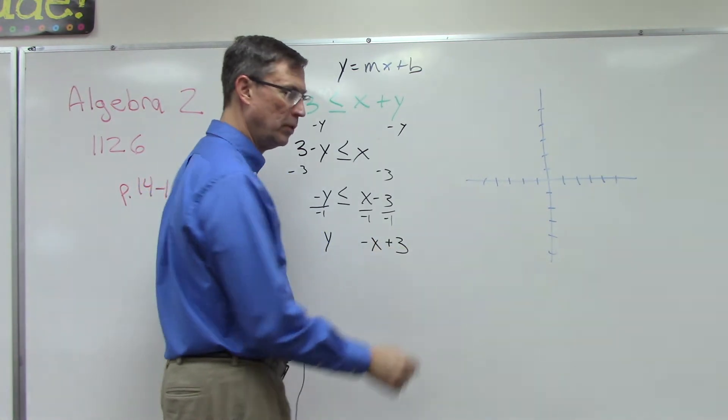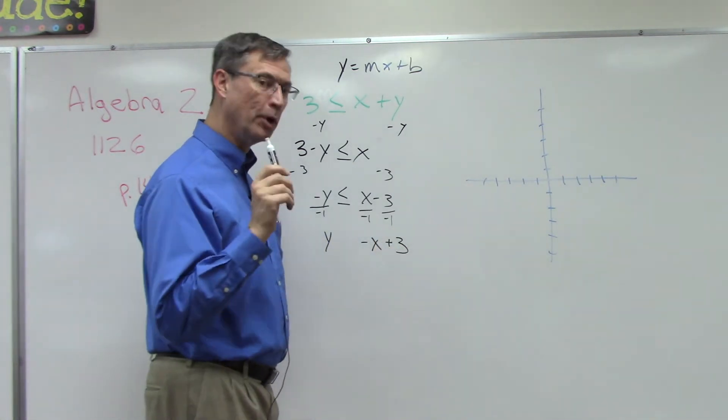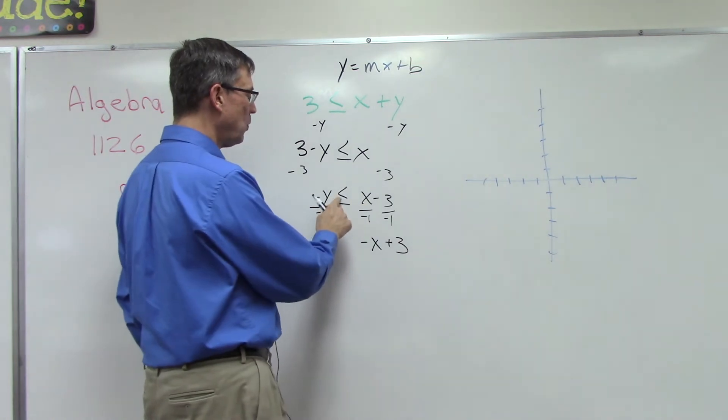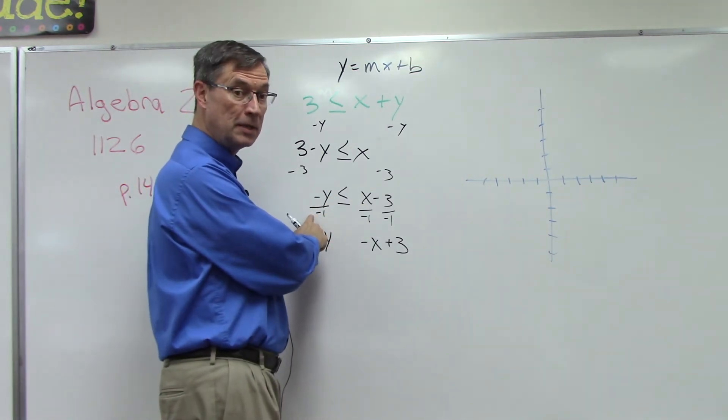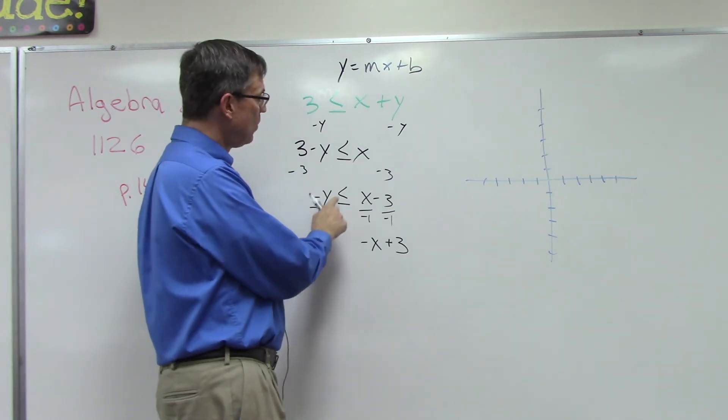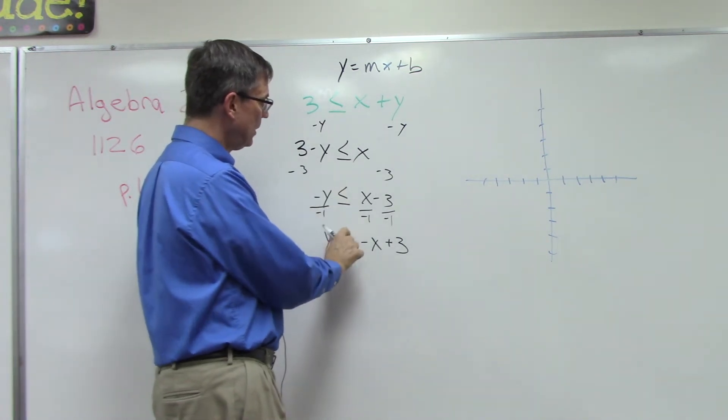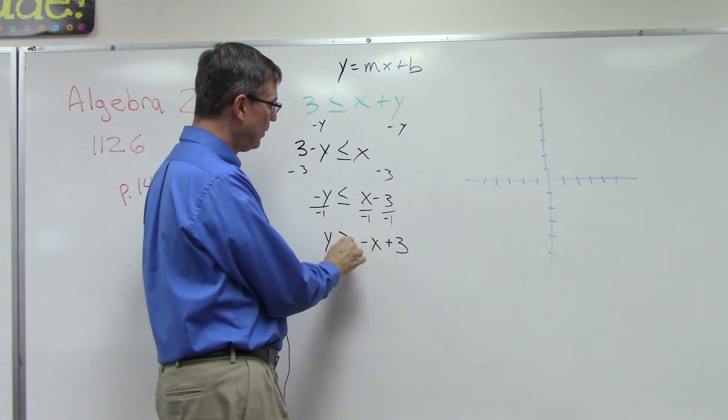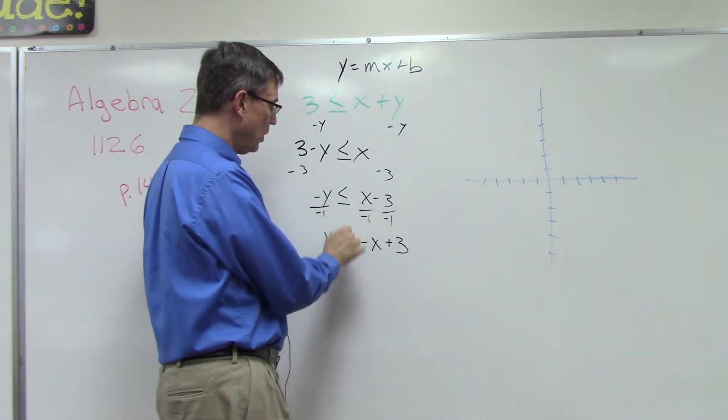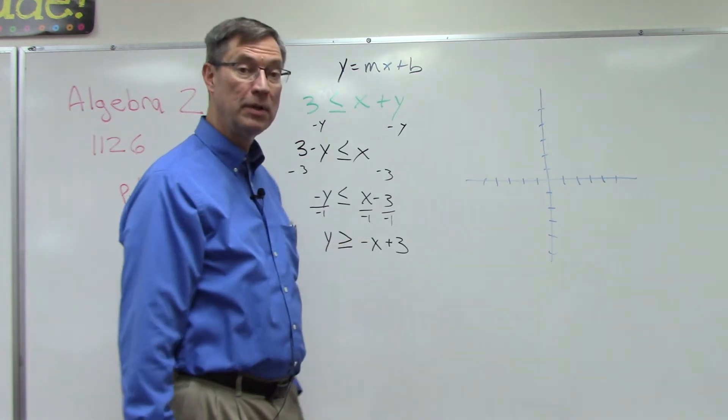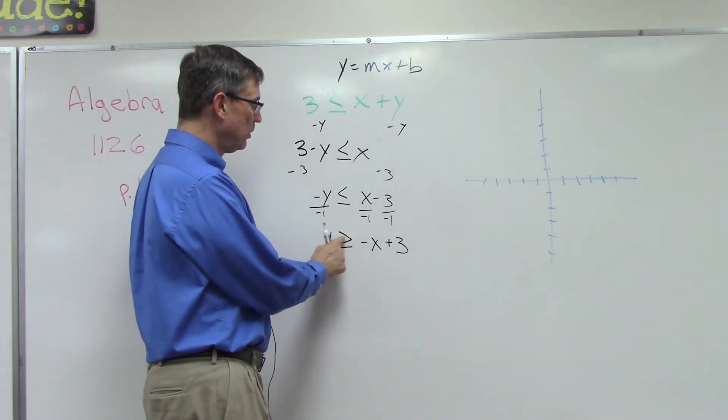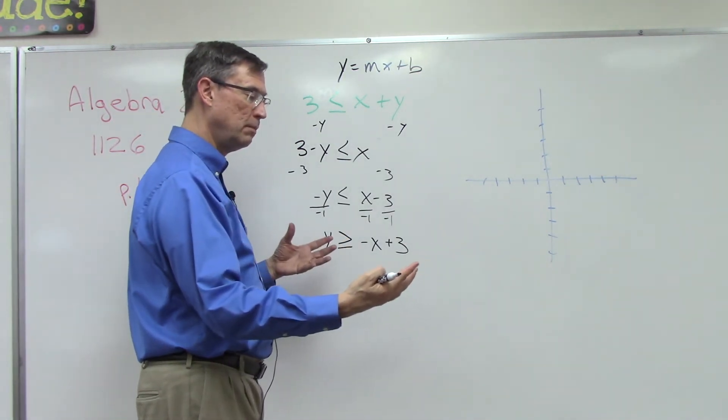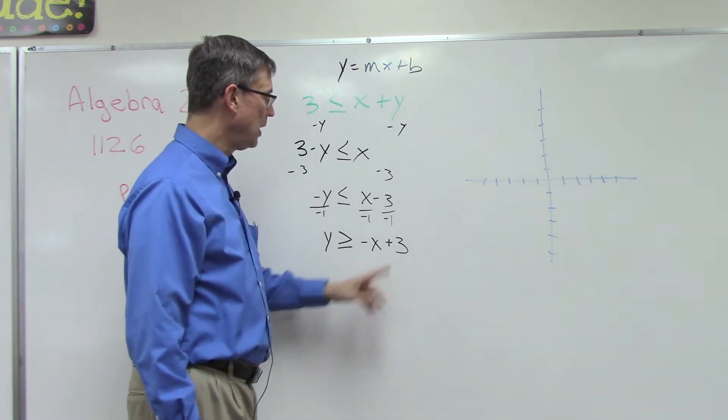And then, do you remember when we're doing inequalities? If we multiply or divide by a negative number, we have to take the direction of the inequality and flip it around. Now, if it's or equal to, then we keep the or equal to. So we're kind of mashing together the greater than and the equal to symbols, and it's both of them together. Now we have the equation of a line.